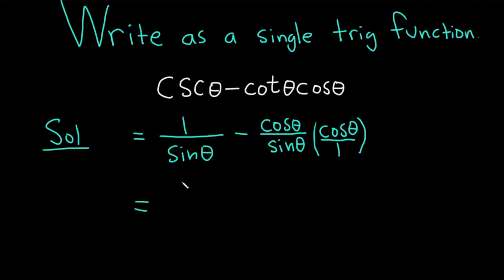This is equal to 1 over the sine of theta, minus cosine times cosine which is cosine squared, and all of this is over sine theta.